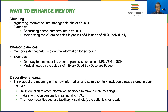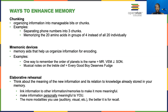Chunking is separating information into more manageable bits or chunks. For example, when memorizing a phone number, it's easier to remember three chunks of digits rather than all 10 digits at once. Or if you're in a biology class trying to memorize 20 different types of amino acids, it might be good to remember four at a time, so your brain treats those five groups of four as five units rather than 20 units.